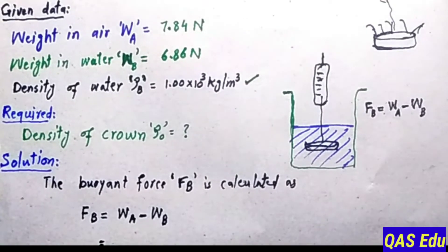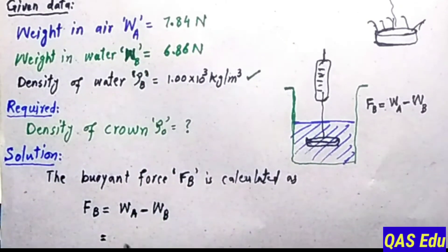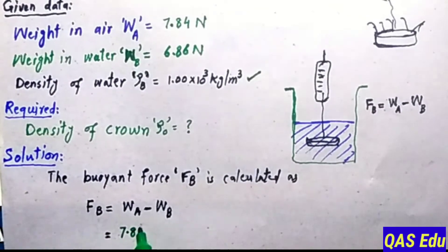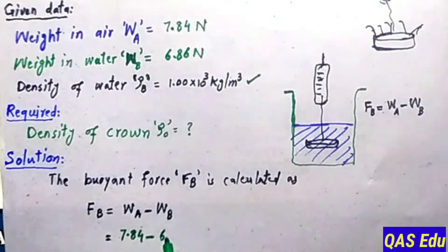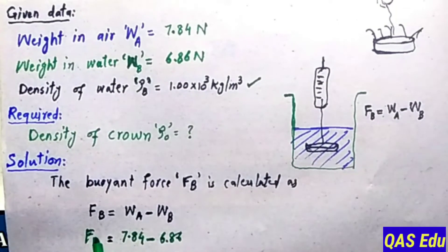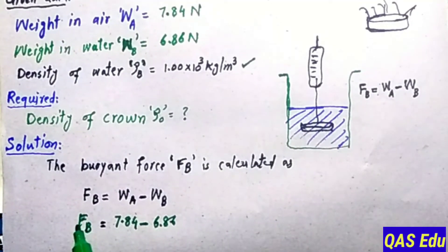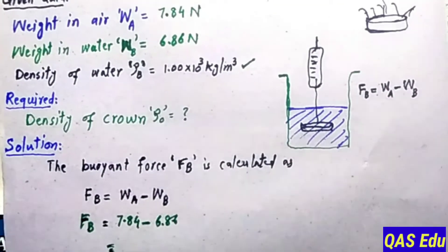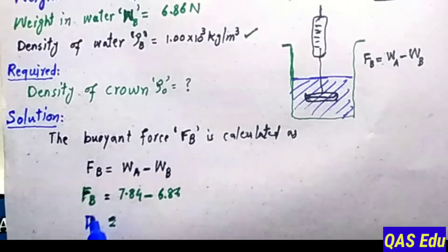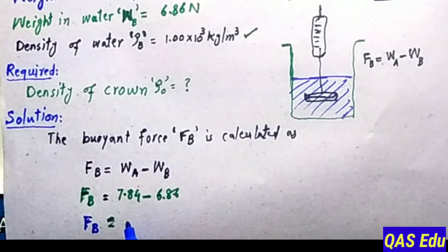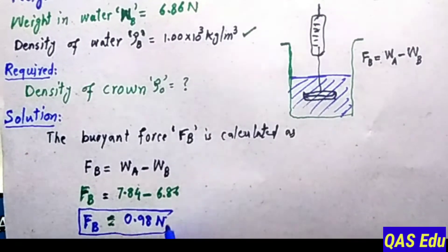The buoyant force F_B equals the weight in air minus the weight in the liquid. The weight in air is 7.84 N, minus the weight in water of 6.86 Newton. The apparent weight of the crown, or buoyant force, gives us 0.98 Newton.